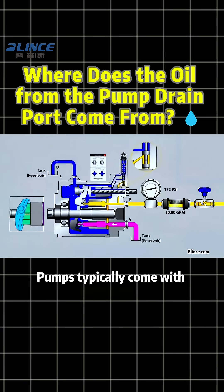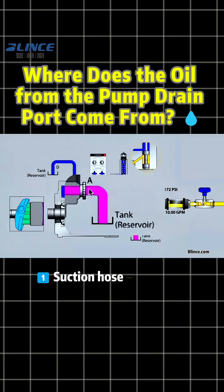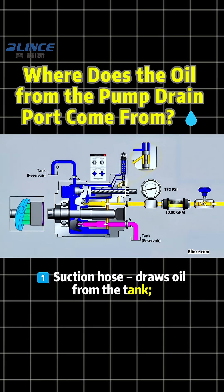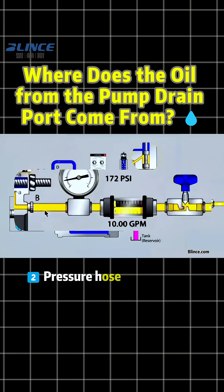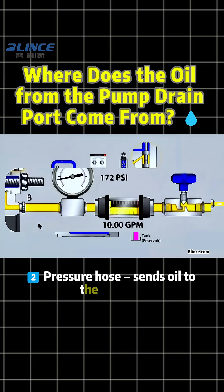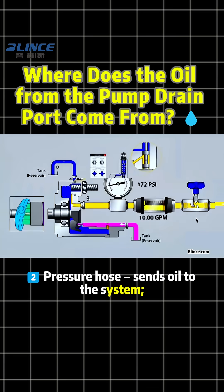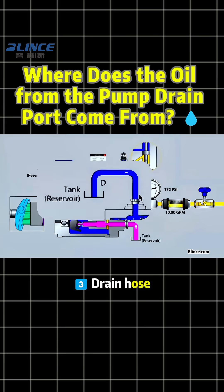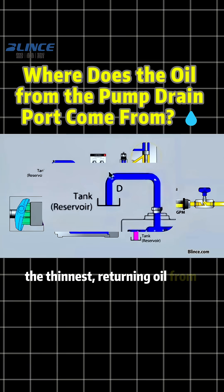Pumps typically come with three hoses. One: the suction hose, which draws oil from the tank. Two: the pressure hose, which sends oil to the system. Three: the drain hose — the thinnest — returning oil from the pump back to the tank.